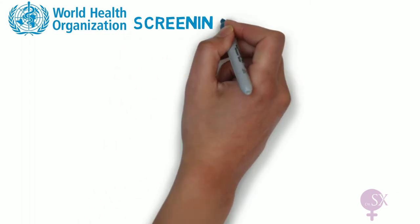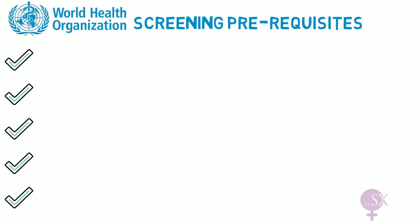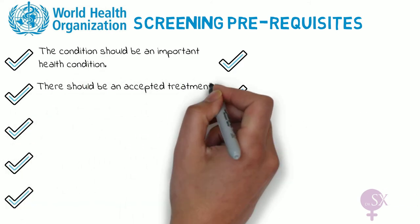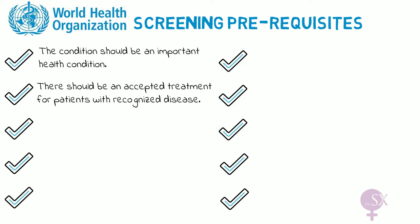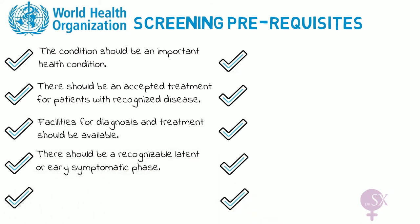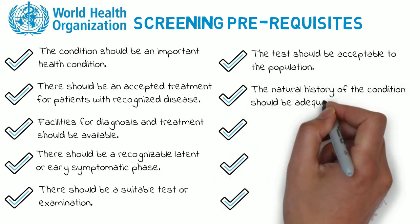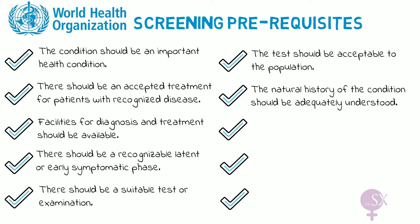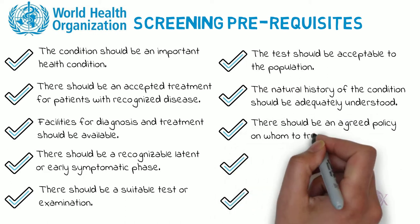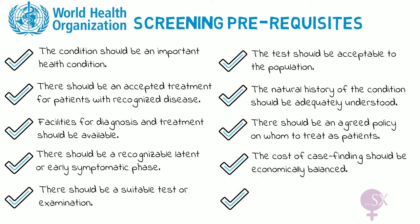The WHO has some screening prerequisites which need to be met to assess whether screening is appropriate. The condition should be an important health problem. There should be an accepted treatment for patients with recognized disease. Facilities for diagnosis and treatment should be available. There should be a recognizable latent or early symptomatic phase, and a suitable test or examination that is acceptable to the population. The natural history of the condition, including development from latent to declared disease, should be adequately understood. There should be an agreed policy on whom to treat as patients. The cost of case finding, including diagnosis and treatment, should be economically balanced in relation to possible expenditure on medical care as a whole. And case finding should be a continuous process and not a once and for all project.